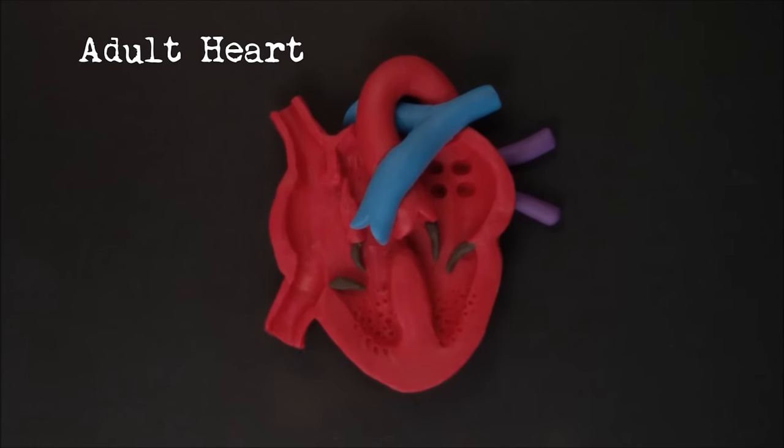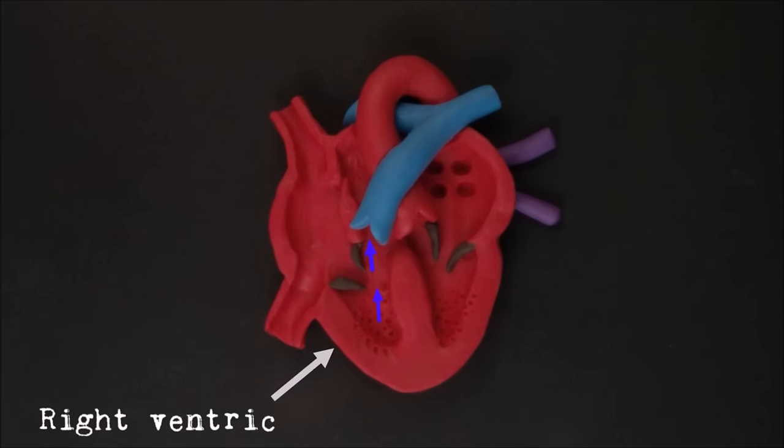Let's start with the structure of the adult heart. As you know the heart is a pump, but more correctly it's two pumps. One pumping blood from the body to the lungs to be oxygenated, and the other pumping the oxygenated blood back to the body via the aorta.